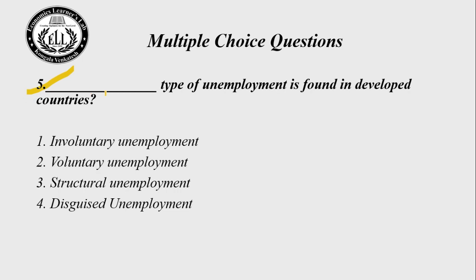Question 5: Which type of unemployment is found in developed countries? Choice 1 — involuntary unemployment; Choice 2 — voluntary unemployment; Choice 3 — structural unemployment; Choice 4 — disguised unemployment. The right answer is Choice 2: voluntary unemployment can be found in developed countries.